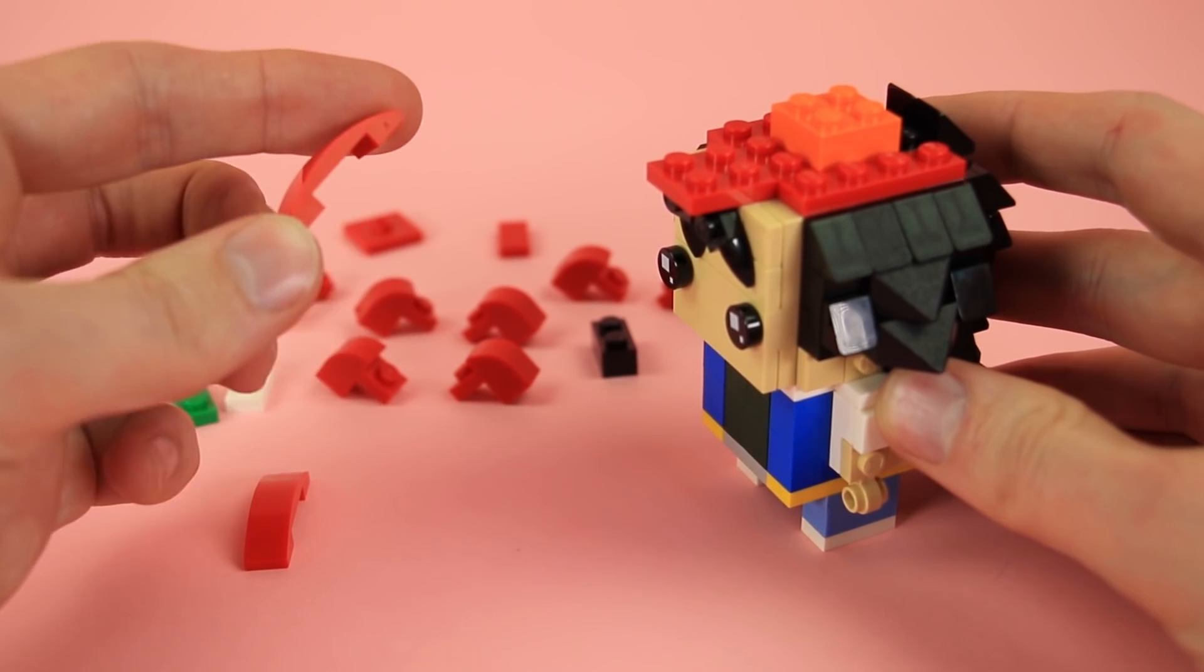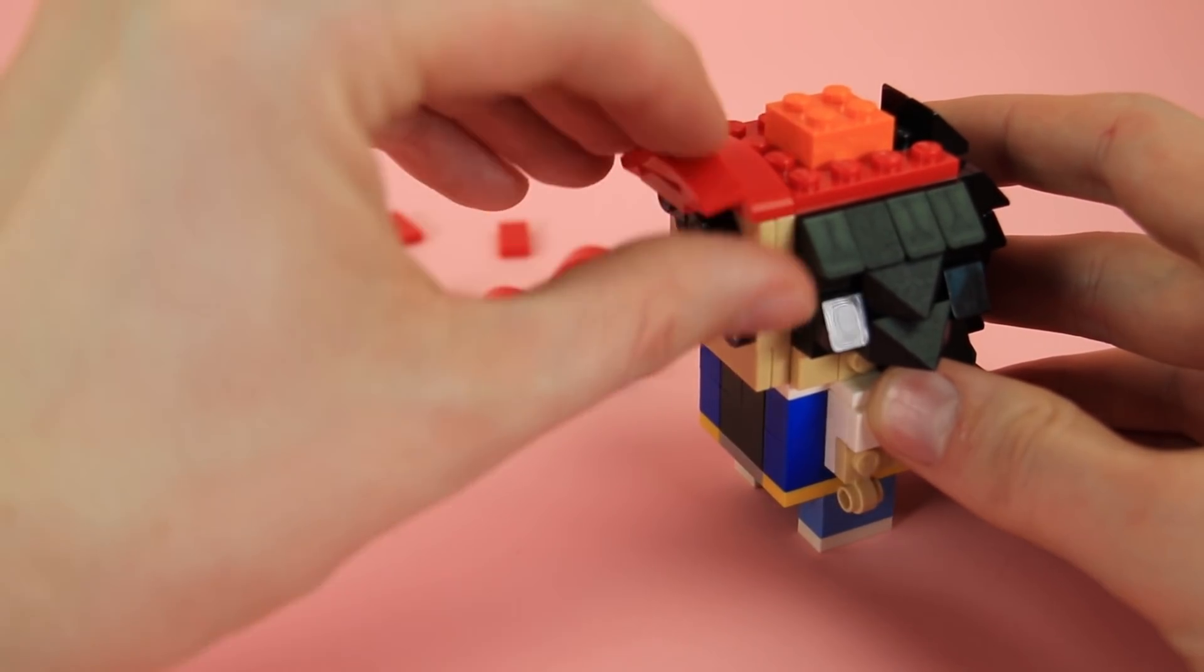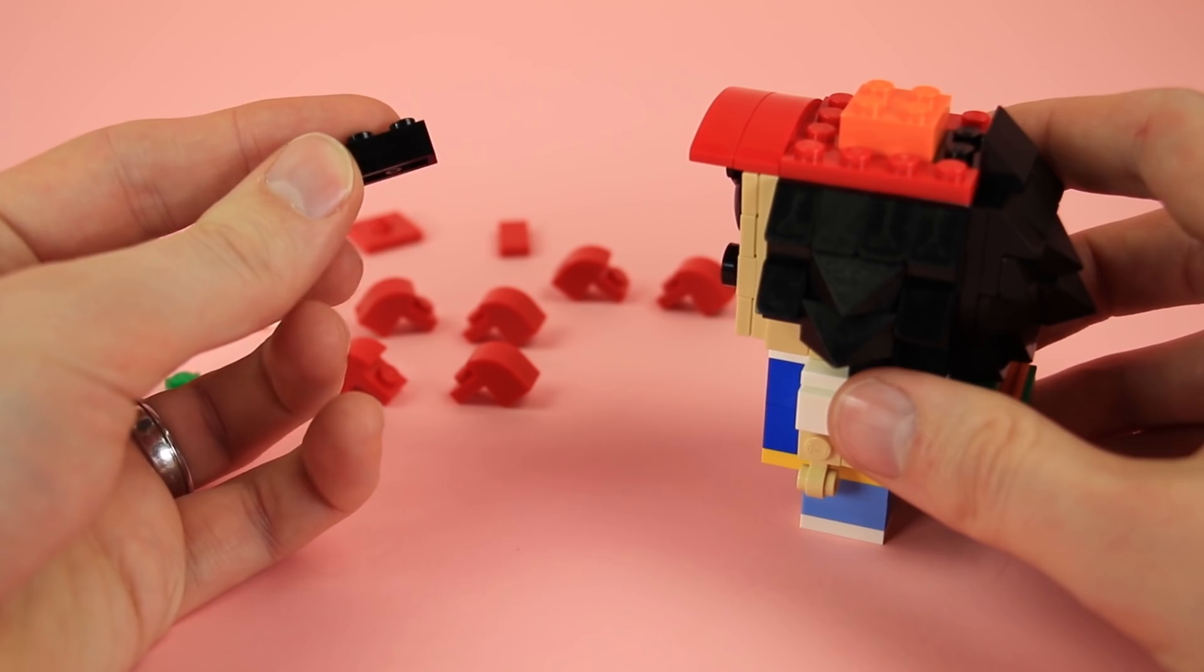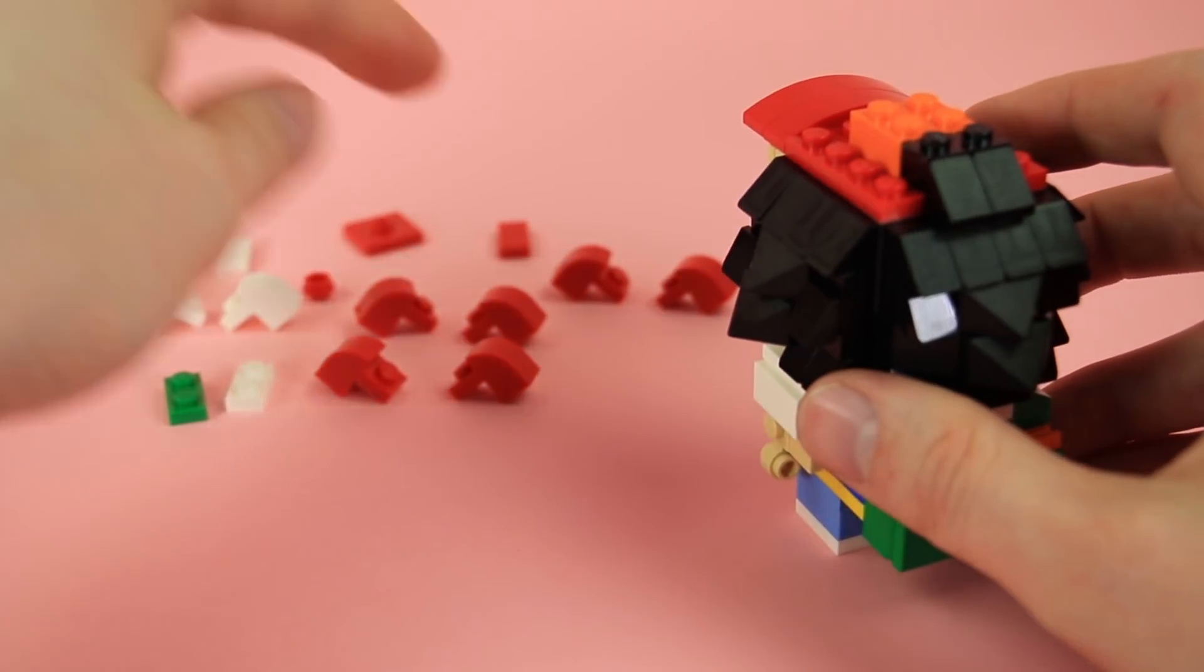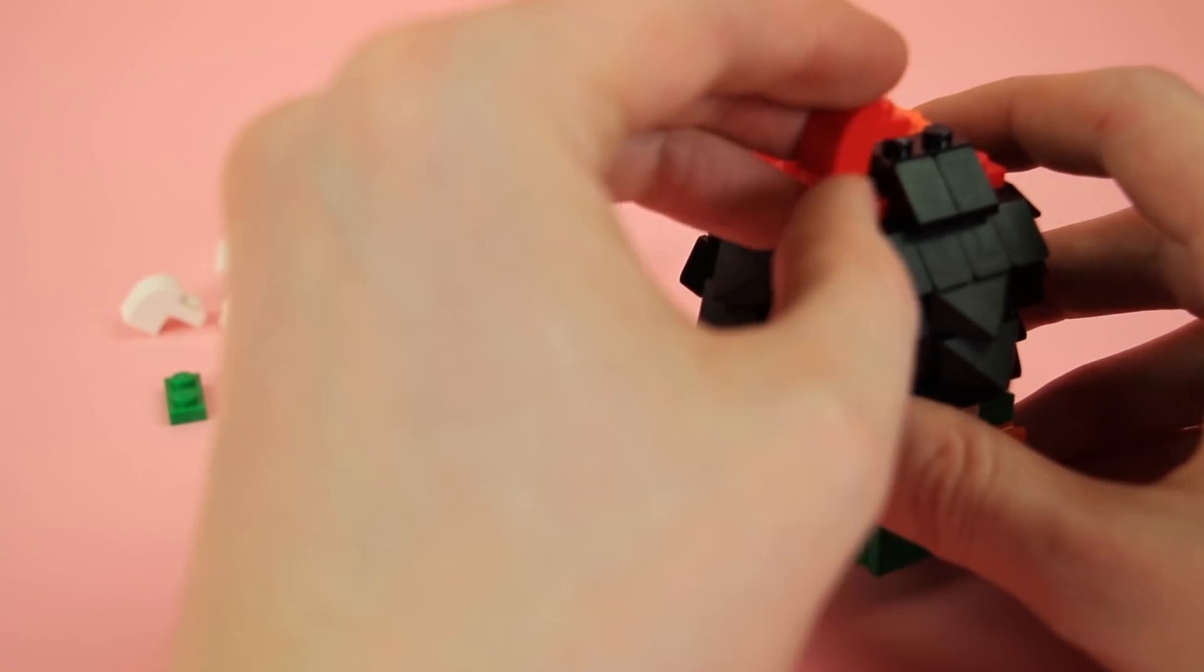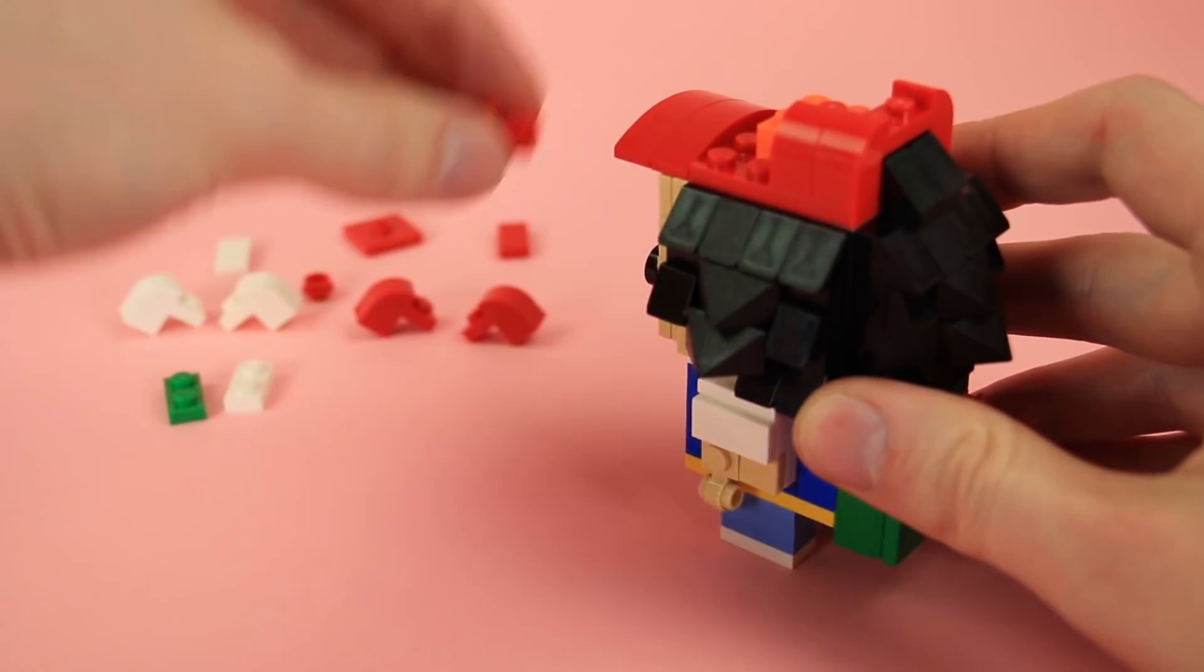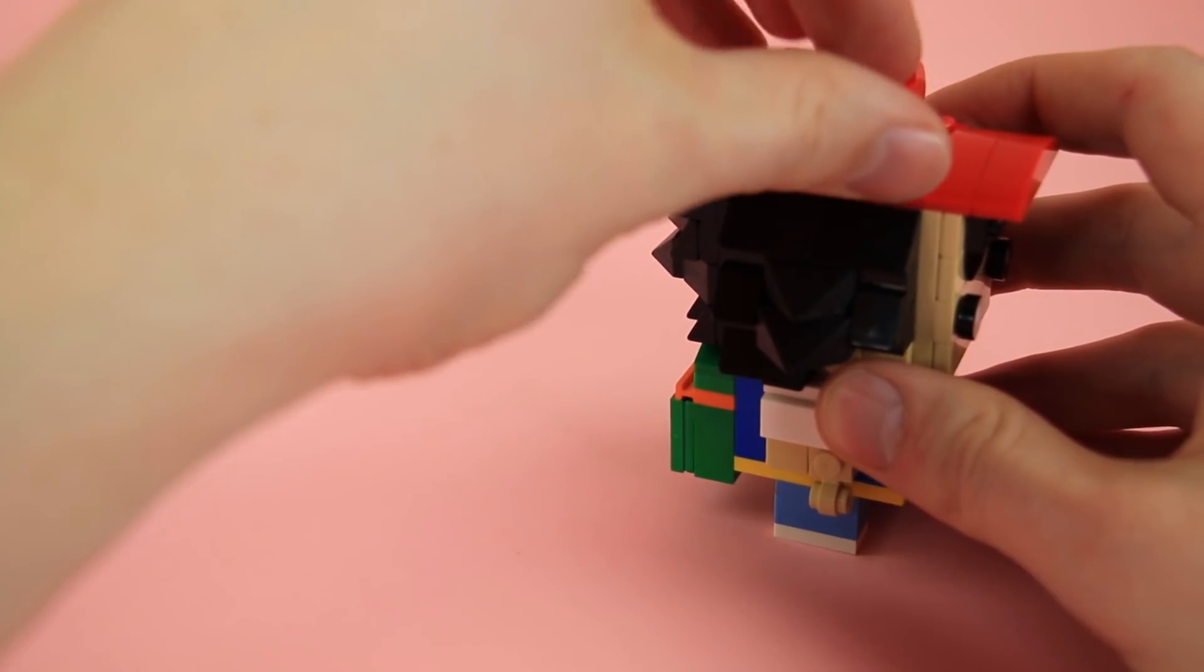And then some of these 1x4 curvy downward slopes in red for the front of the hat. The brim or the bill. Two 1x2 black plates stacked up. Filling in that last bit of hair there. Then a whole bunch of these tiny curvy arches. We'll need 6 of them in red. 3 on each side.